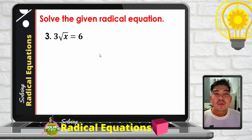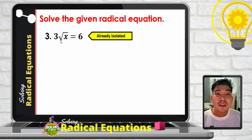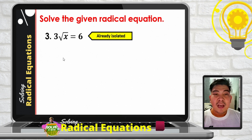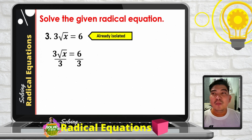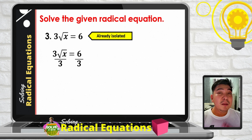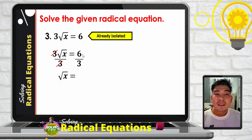Example 3: 3 times the square root of x equals 6. The equation is already isolated. We divide both sides by 3 — equivalently, multiply both sides by one-third — giving us: square root of x equals 2.